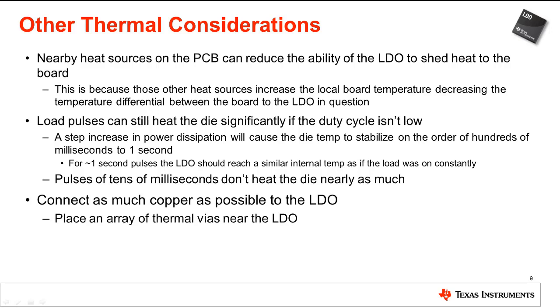To avoid thermal shutdown, only pulse the load for tens of milliseconds and then leave the LDO off an equal or greater amount of time to cool off. The final thing to do in every layout of an LDO is to connect as much copper as possible to the LDO thermal pad. This will increase the size of the heat sink and can reduce the theta JA shown in the datasheet by up to 25%. Also, be sure to place an array of thermal vias around the LDO to assist in removing heat from the LDO.